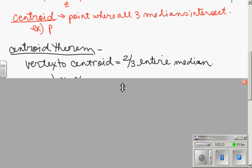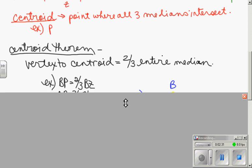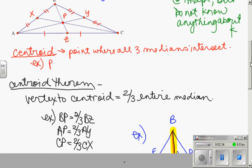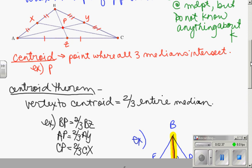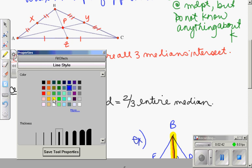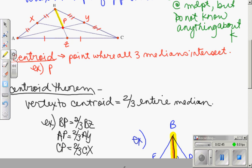And it says the vertex to the centroid is equal to two-thirds of the entire median. Okay, so that lets us set up some examples. If you look back at our picture, the length of BP, BP is going to be two-thirds the length of the whole median. As a sidebar, that means that from the centroid to the midpoint is one-third the length of the whole thing.